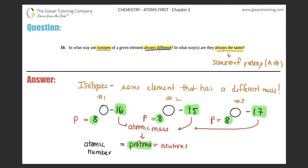So we already know one difference: isotopes will have a different atomic mass. And they'll have the same number of protons. Another similarity is that it will be the same element — oxygen compared with carbon will never be isotopes of each other. It has to be the same element.